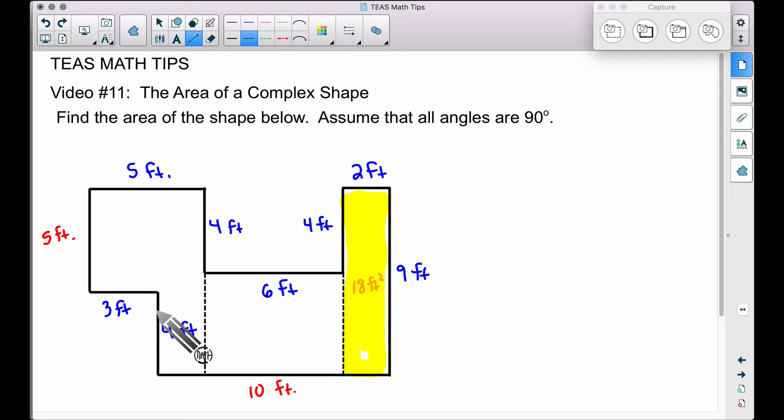4 feet is that. How do we figure out this dotted line here? Well, take note from here all the way down, that's 9 feet. And we're assuming everything is 90 degree angles. So we have right angles. 9 feet all the way down. This much is 4 feet. So this much here has to be 5 feet because 4 feet plus 5 feet gives us the entire 9 feet we have here.